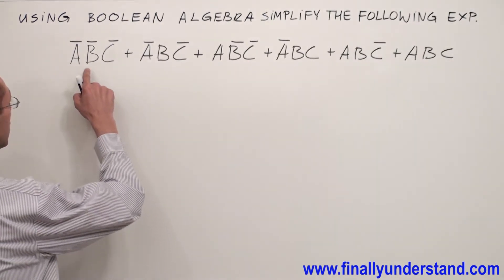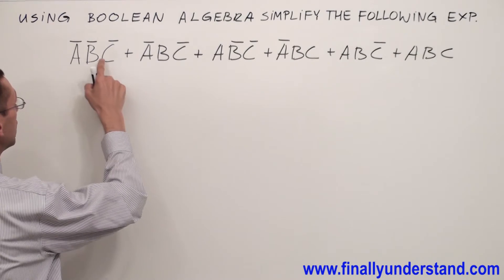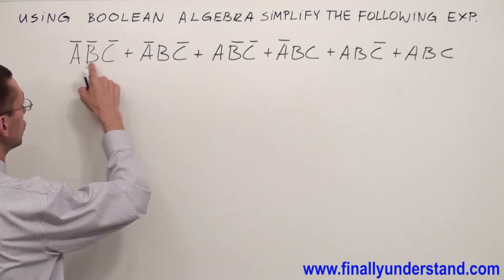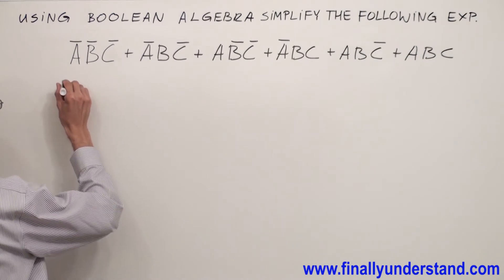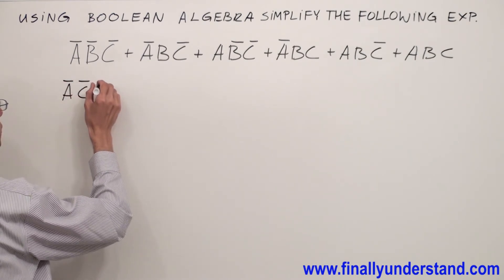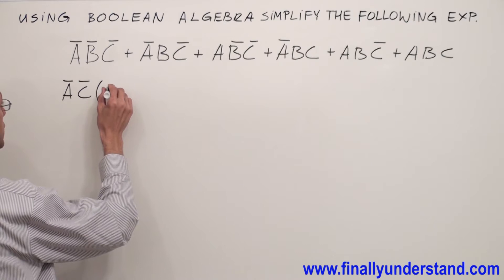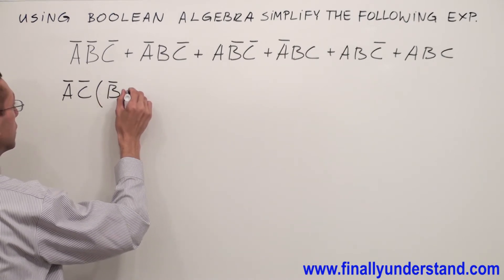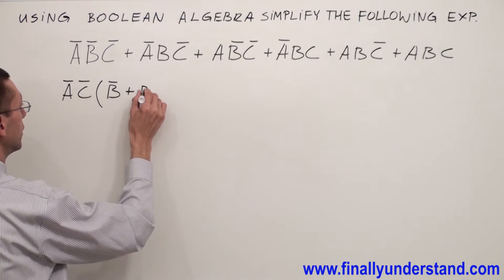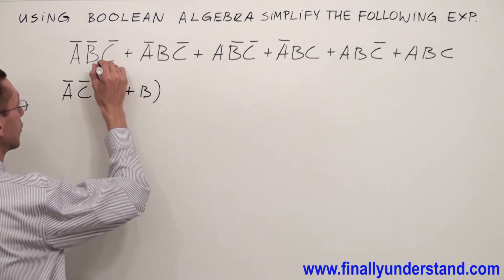So let's take a look, we have A̅ and C̅ in these two terms, that's why I'm going to factorize A̅ and C̅. Inside of the parenthesis I'm going to leave B̅ or B. I factorize these two.